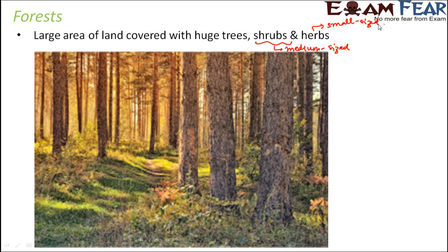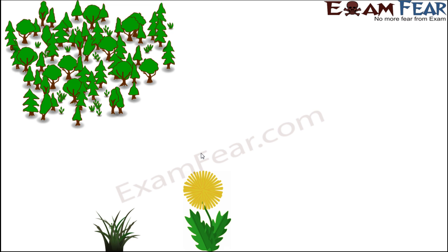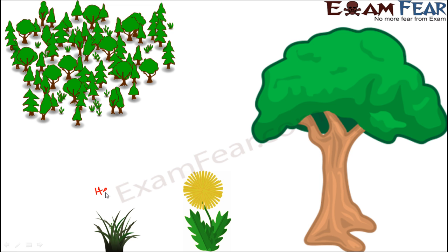If you look at a forest, it is not only the big trees that are present, but also shrubs and herbs. You can see the barks of tall trees, but at the same time, at ground level, you can see tiny herbs, grasses, and small trees of varying heights. So a forest actually has trees of all different sizes — from herbs to shrubs to tall trees. These tall trees are so many in number that they form a covering over the entire forest.